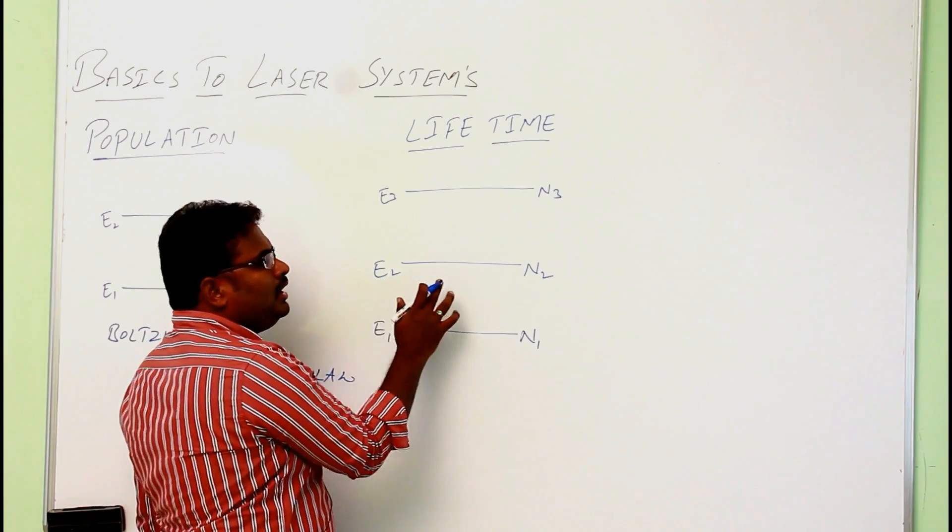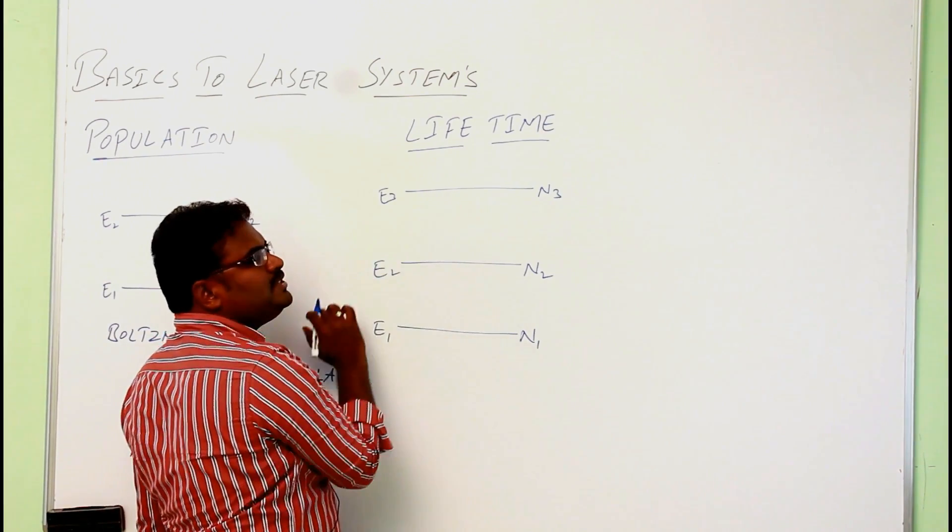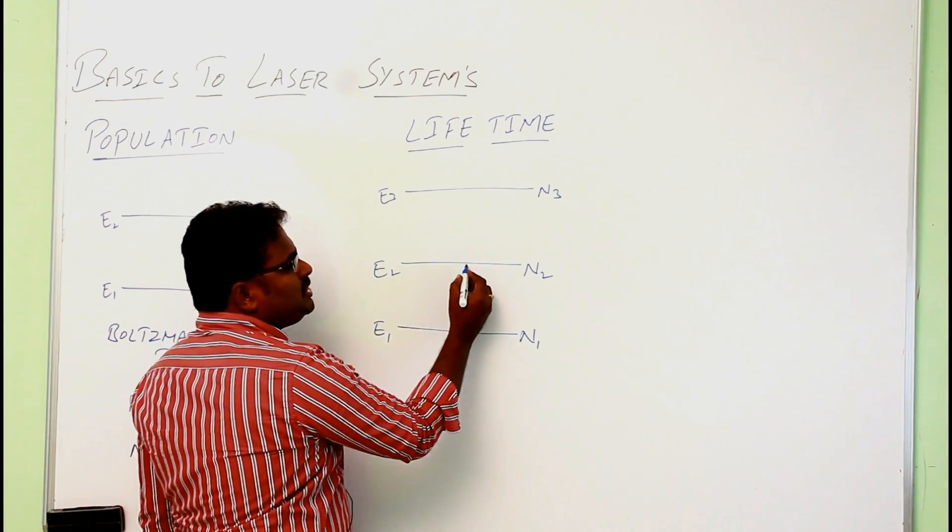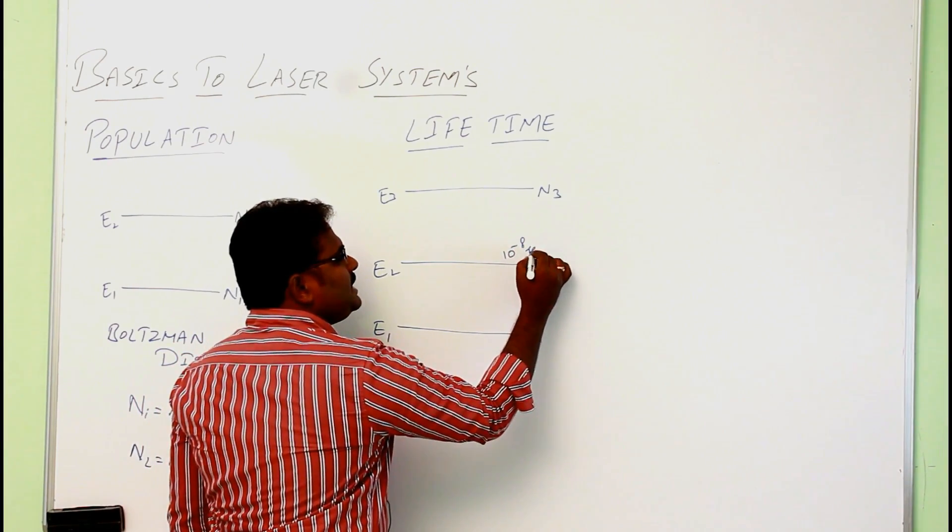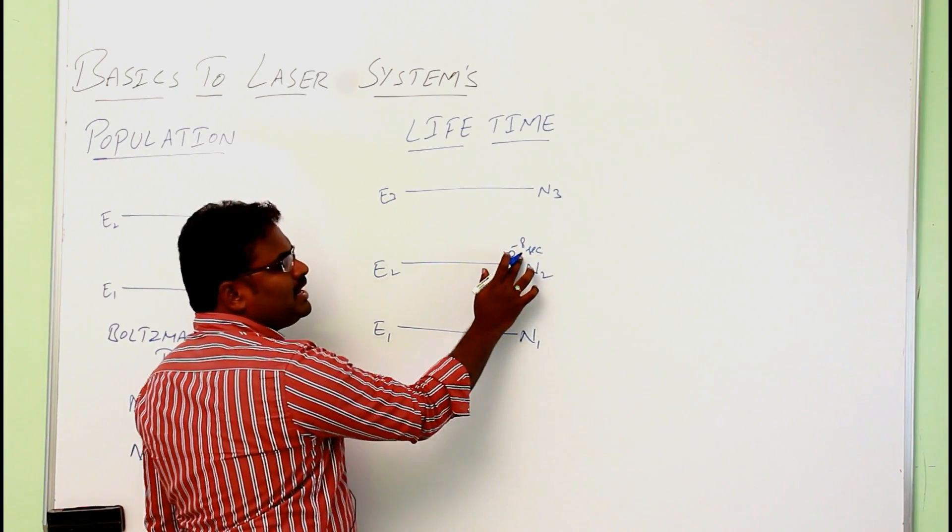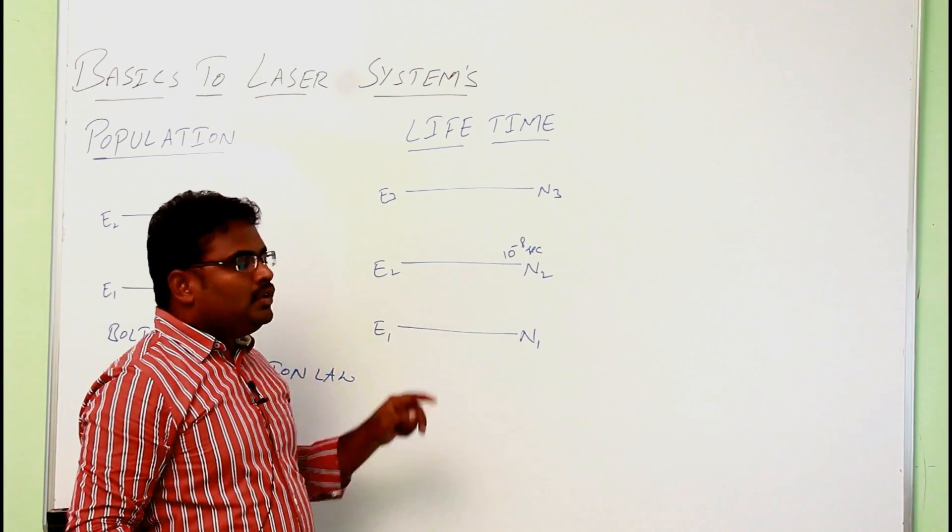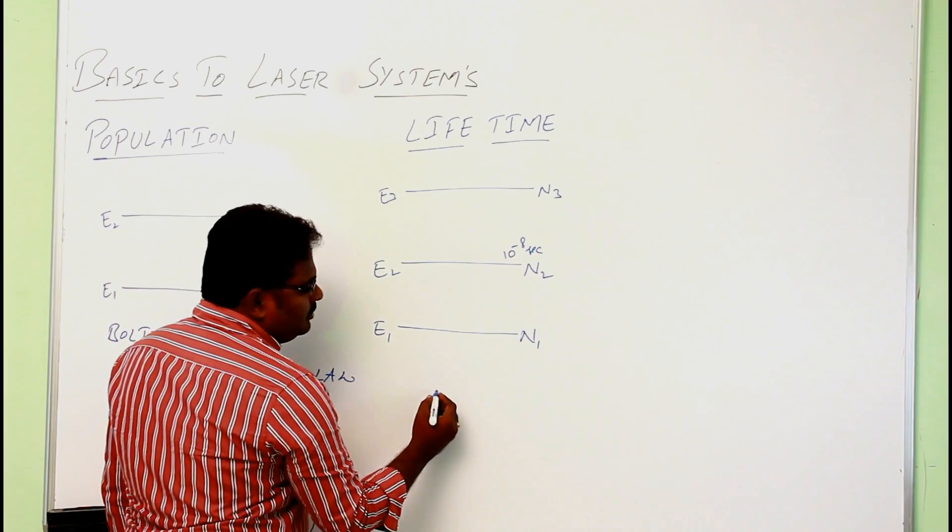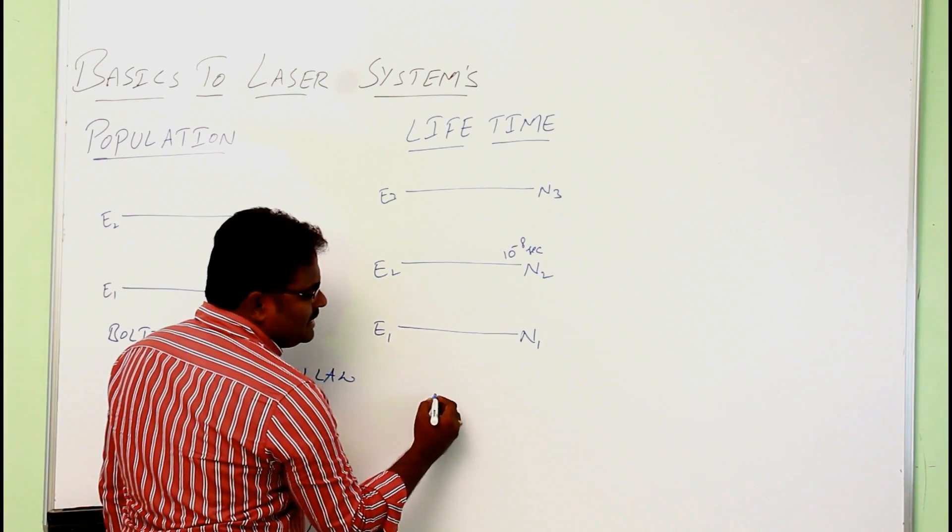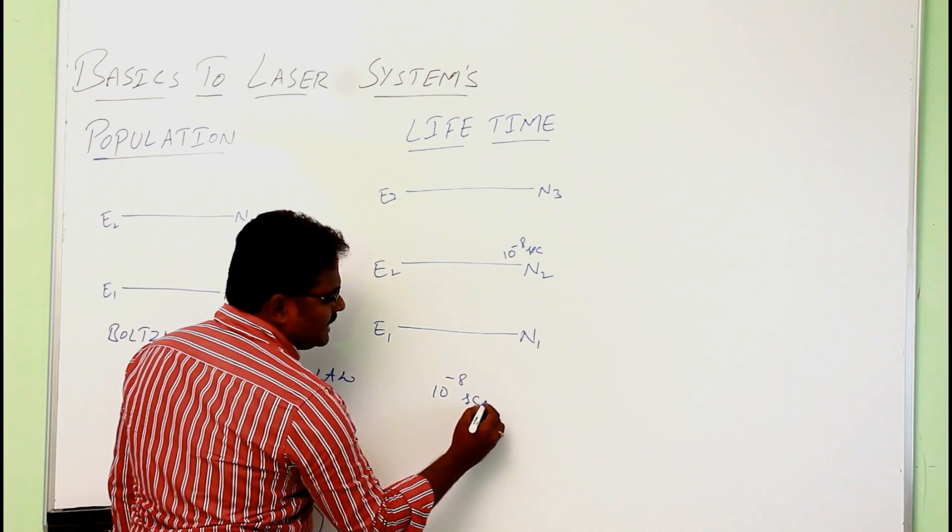The atoms will spend different times in different energy levels. Suppose if it spent 10 power minus 8 seconds in this level, then this can be considered as the lifetime of the atom in this particular level. So the average lifetime of an atom or electron in the excited state is around 10 power minus 8 seconds.